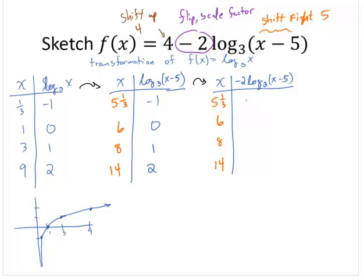-1 times -2 is 2. 0 times -2 is 0. 1 times -2 is -2. 2 times -2 is -4. And now finally, let's take care of this shift up 4.